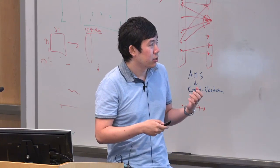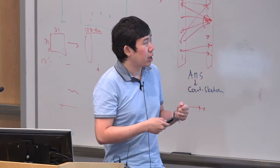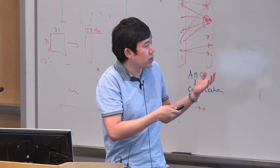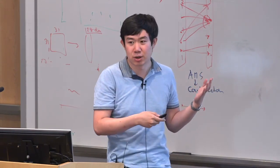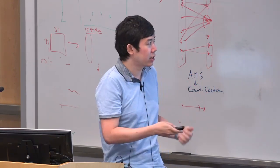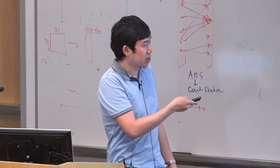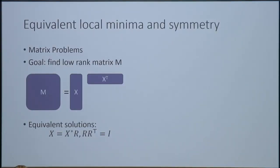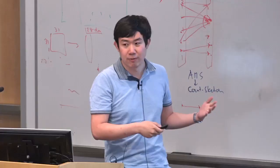In matrix problems, the goal is to find a low-rank matrix. You parameterize it as the product of two smaller matrices. If M can be written as X times X-transpose, it's automatically low-rank. But in this formulation, if you find an optimal solution X-star, it's not unique — you can apply an arbitrary rotation matrix, giving many equivalent solutions.